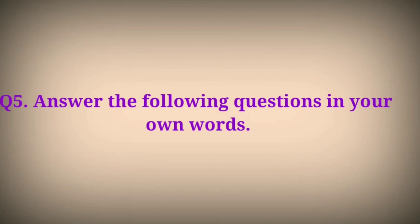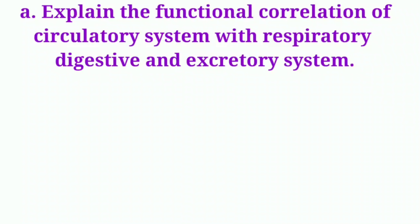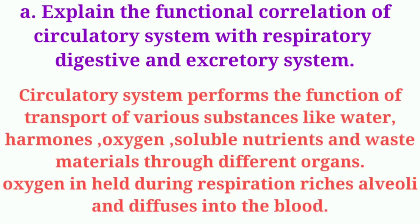Question 5 – Answer the following questions in your own words. Explain the functional correlation of the circulatory system with the respiratory, digestive, and excretory systems.